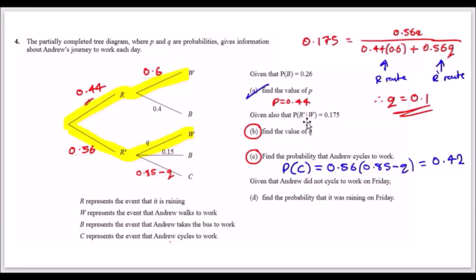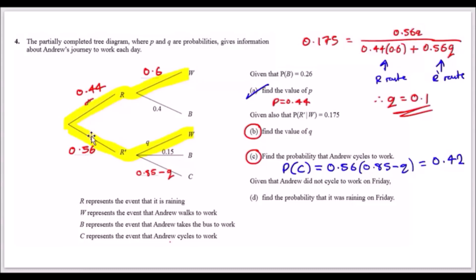Given P(not R | W) = 0.175, find q. For a conditional probability question, the denominator is always the total area of the given event W. Find all routes reaching W, then identify the not-R routes within W. The area of W is found by tracing all chains leading to W through the updated p values.